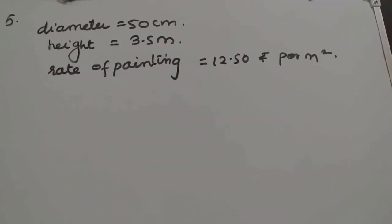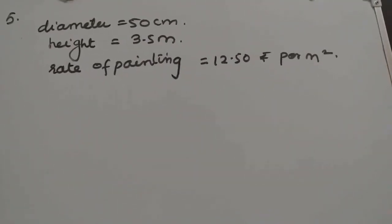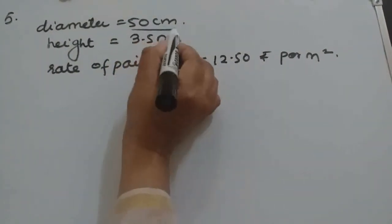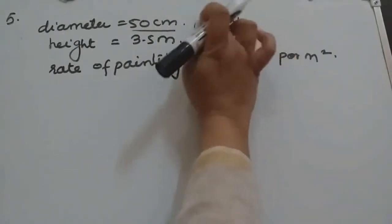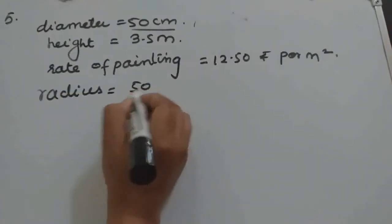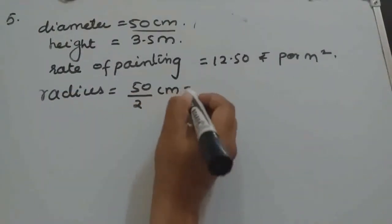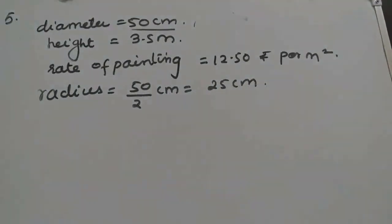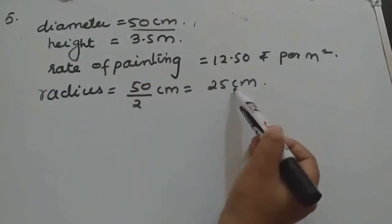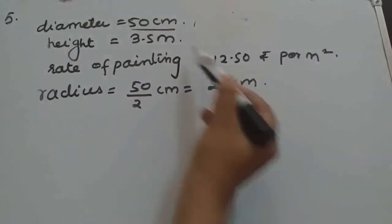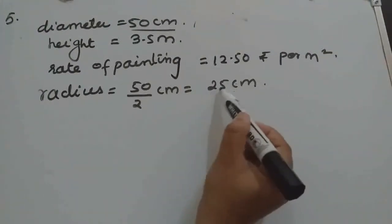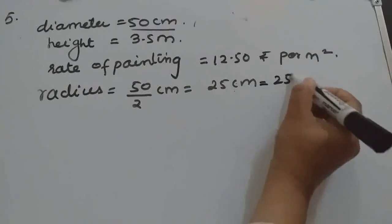Question number 5. A cylindrical pillar is 50 cm in diameter, so we should find the radius. Radius will be 50 by 2, that is 25 cm. Height is given as 3.5 meter. Now this is centimeter and this is meter, so both should be in the same unit. I will convert 25 cm to meters by dividing by 100, giving 1/4 meter.